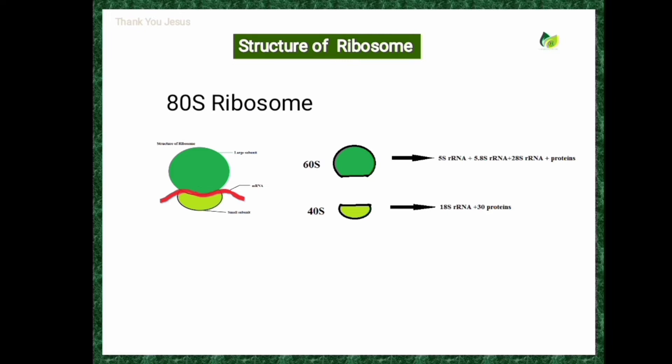The 40S subunit consists of 18S rRNA plus 30 different types of proteins. This is a brief account regarding the ribosomes.